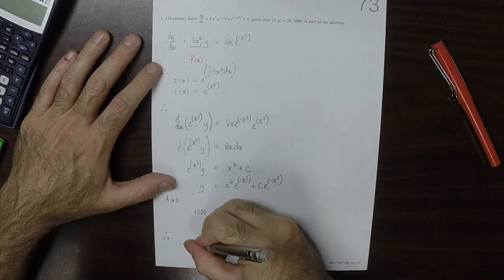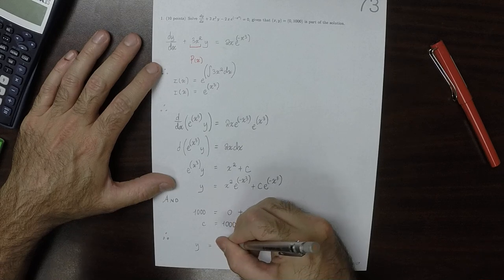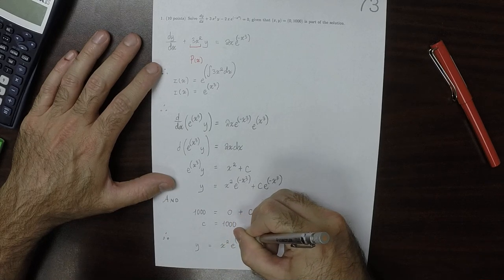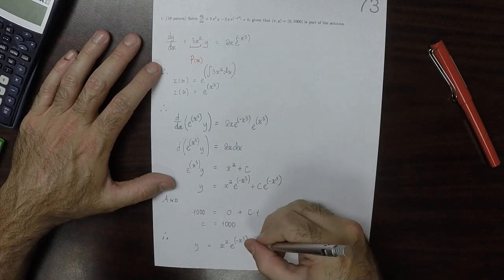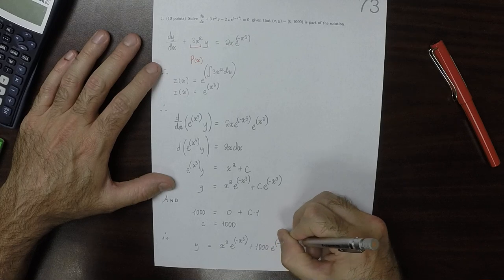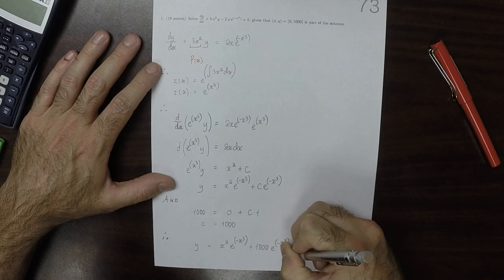Therefore, Y is x squared exponential negative x cubed plus one thousand exponential negative x cubed.